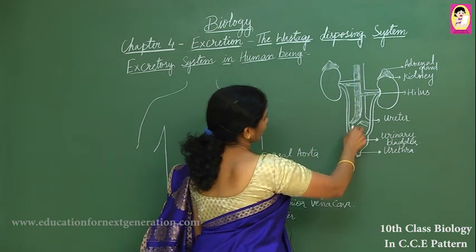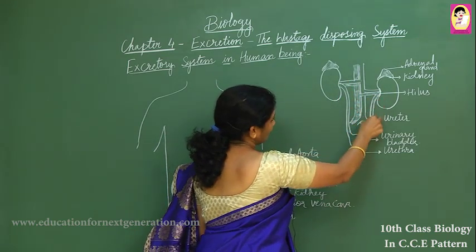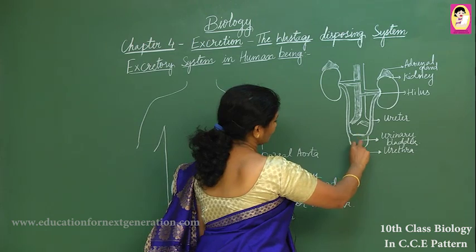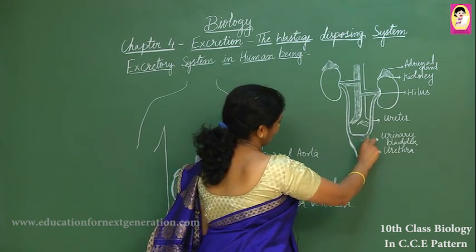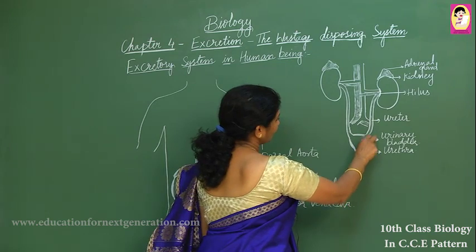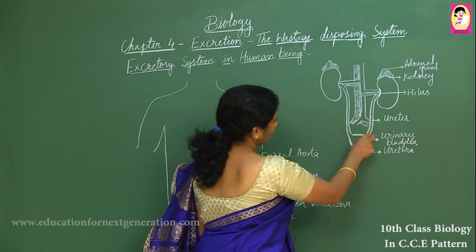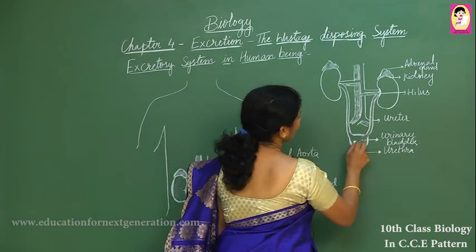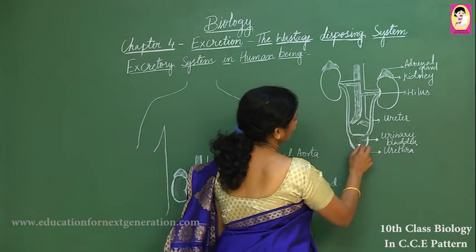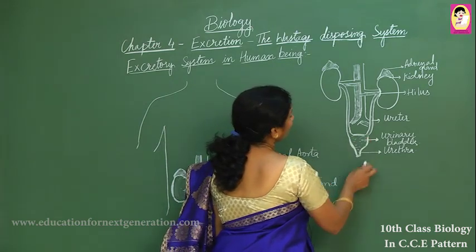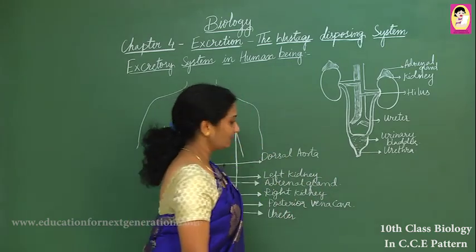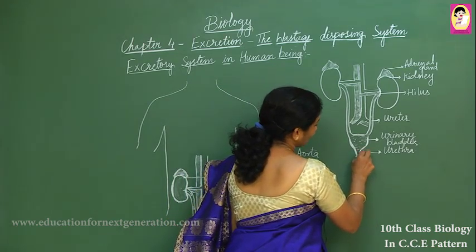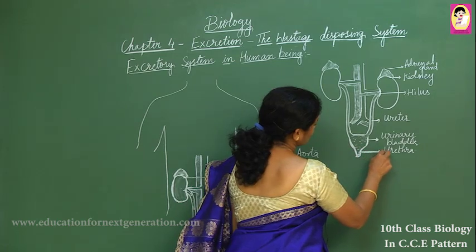The ureter and both these ducts are connected to a common chamber which is big, thick, and muscular — this is called the urinary bladder. In the urinary bladder, urine is temporarily stored. When it reaches 200 to 300 ml, the involuntary action starts and we feel the sensation of passing urine. There is also a small duct which we call the urethra, which opens outwards.